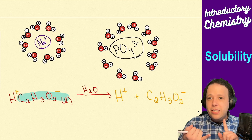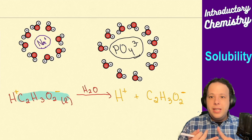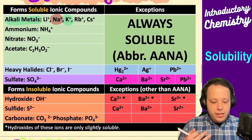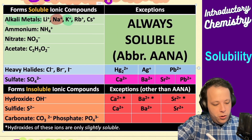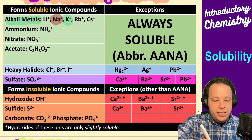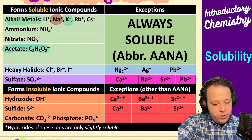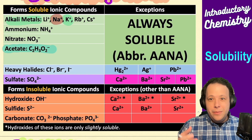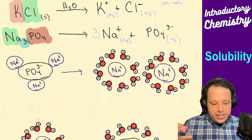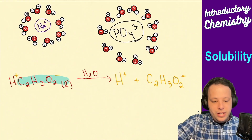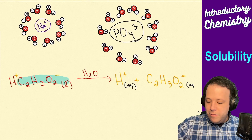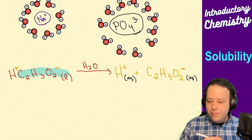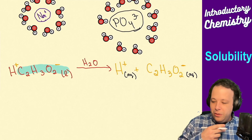We can see that the acetate ion is one of our always-soluble species — acetate is always soluble no matter what. So in this case it's going to be soluble, and we write it as aqueous for both parts of the reaction.